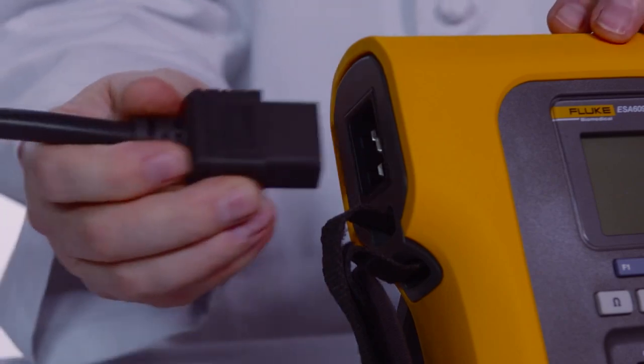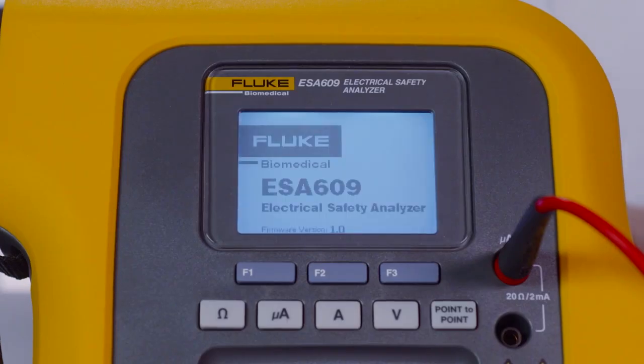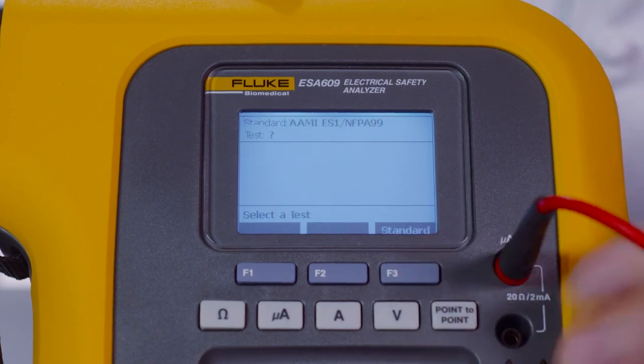To begin testing, plug the ESA609 into an outlet. The ESA609 will perform a series of self-tests and prompt you to select a test standard. For the purpose of this test, we'll select the AMI-ANSI ES1.